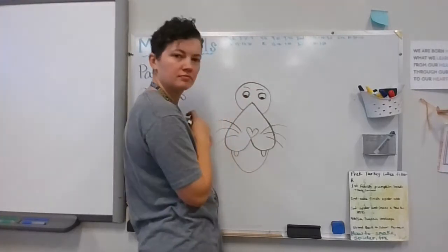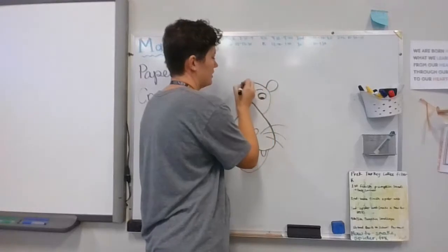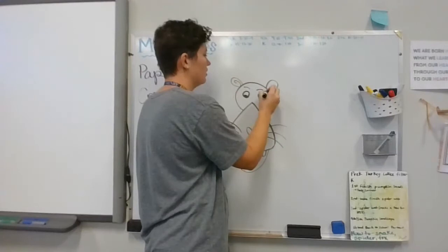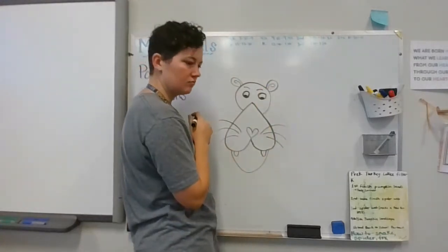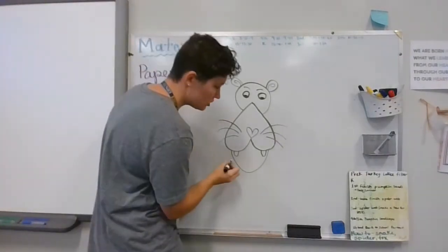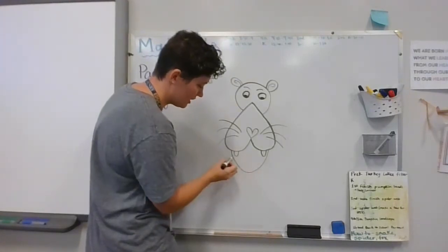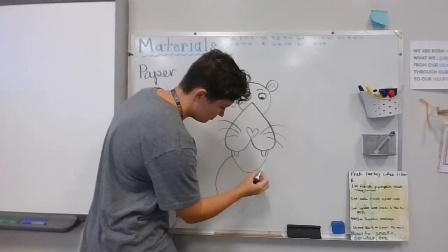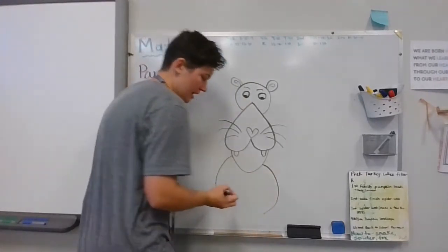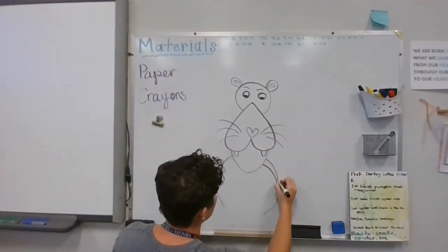He needs two ears, so I'm doing kind of an oval shape with a curlicue in the middle. Now here comes the trickier part - we have to make his body. What I'm going to do is come down here to the bottom of his jaw and do a circle, or more like a bump here. Then I'm going to come down here to the bottom. I'm going to even those up a little bit first.